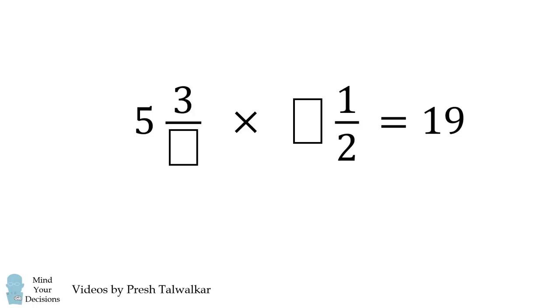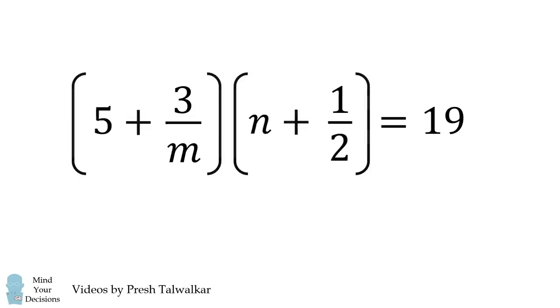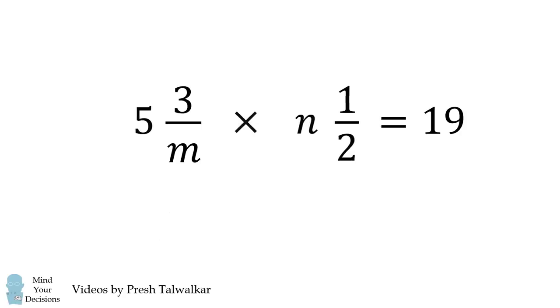Here's an equivalent way of stating the problem. Suppose the two numbers are equal to m and n. We can rewrite the multiplication in the following fashion. We want 3 over m to be a fraction in lowest terms, and we want n to be a whole number that's greater than or equal to 1. So the challenge is to solve for the values of m and n.